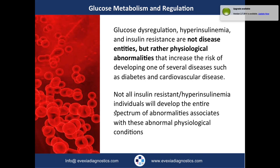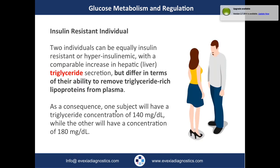Any increase in blood glucose that's not regulated properly causes oxidative damage to tissue and oxidative stress to the endothelial cells of the circulatory system — leading to atherosclerosis and arteriosclerosis. It also damages the pancreas itself, causing oxidative damage to the beta cells, which produce insulin. So we're trying to catch glucose dysregulation early and manage it. That's really the beauty of tonight's webinar.